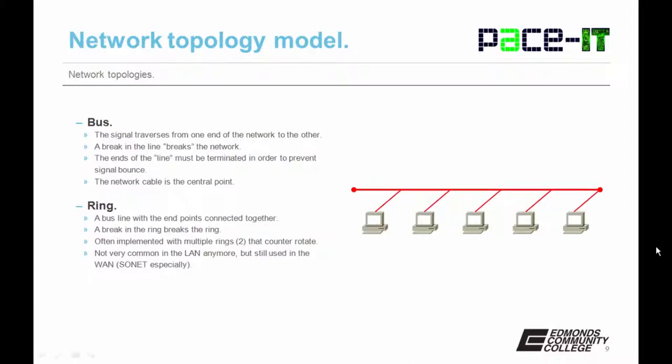The signal traverses from one end of the network to the other. A break in the line breaks the network. The ends of the bus line needed to be terminated in order to prevent signal bounce — if there was a break or the ends were not terminated, the signal would bounce back and create a storm. In a bus topology, the network cable is the central point.